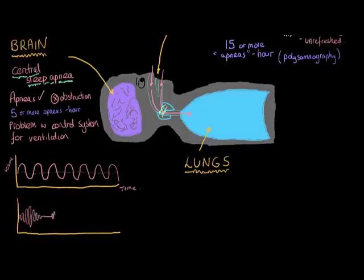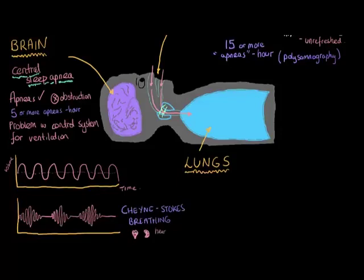And then again, it starts crescendo, decrescendo, apnea. And it carries on like that. And this is actually something that's called Cheyne-Stokes breathing. And with this Cheyne-Stokes breathing, we believe that this is particularly related to central sleep apnea as a result of heart failure, strokes, and renal failure.